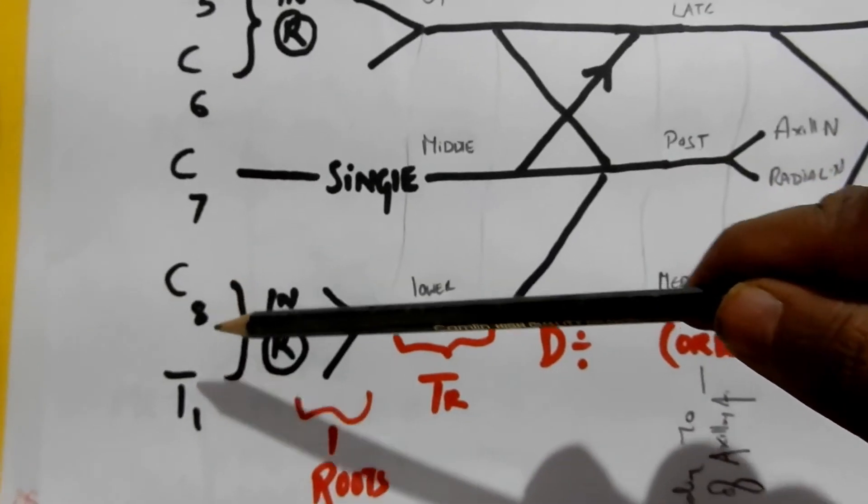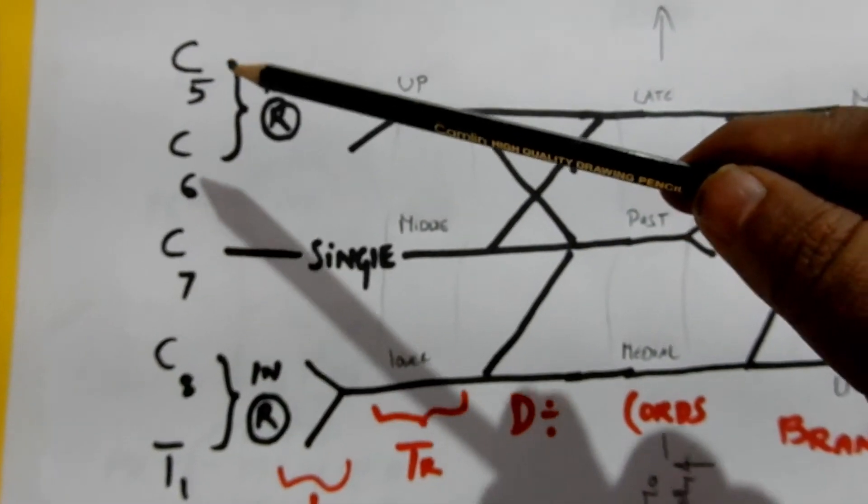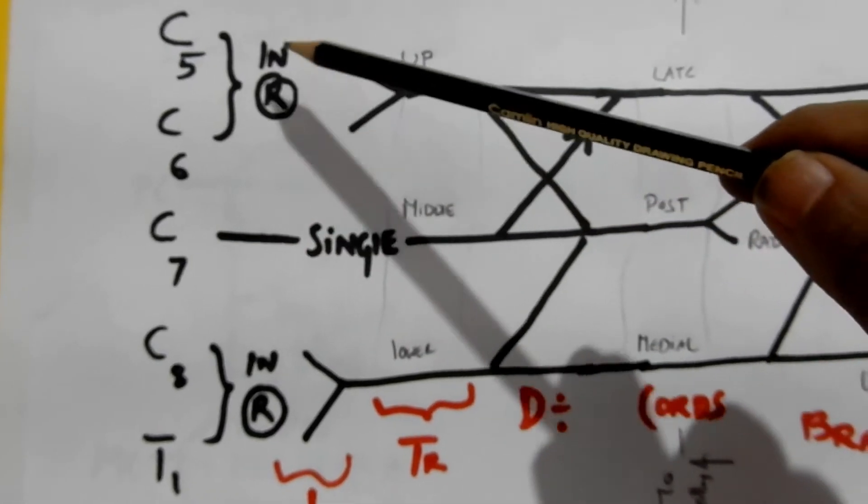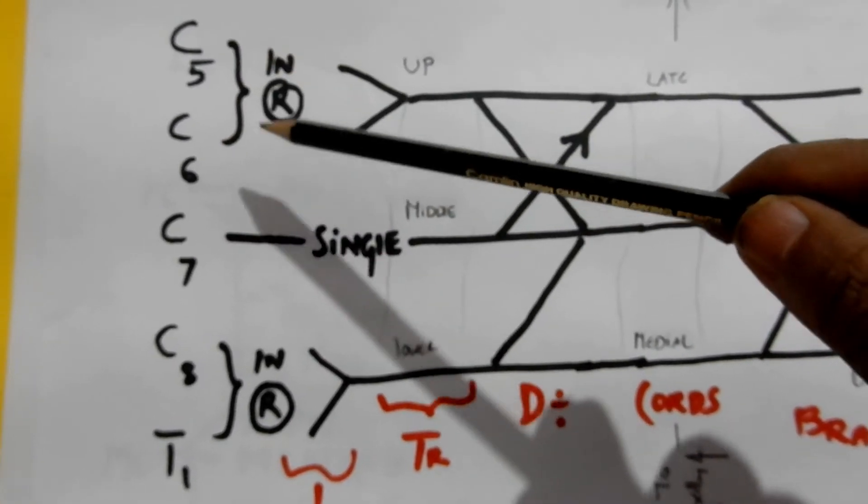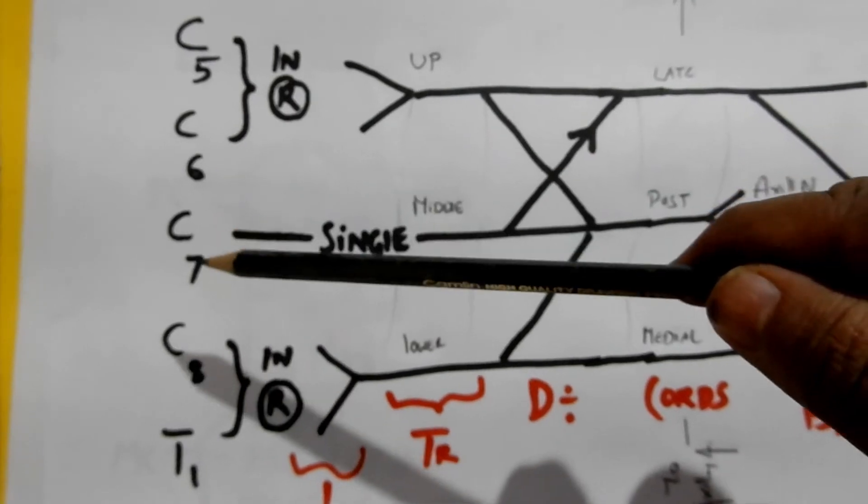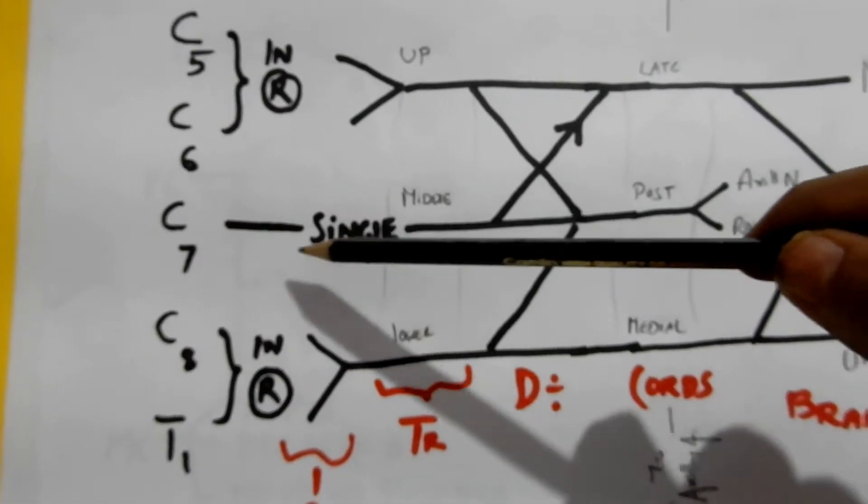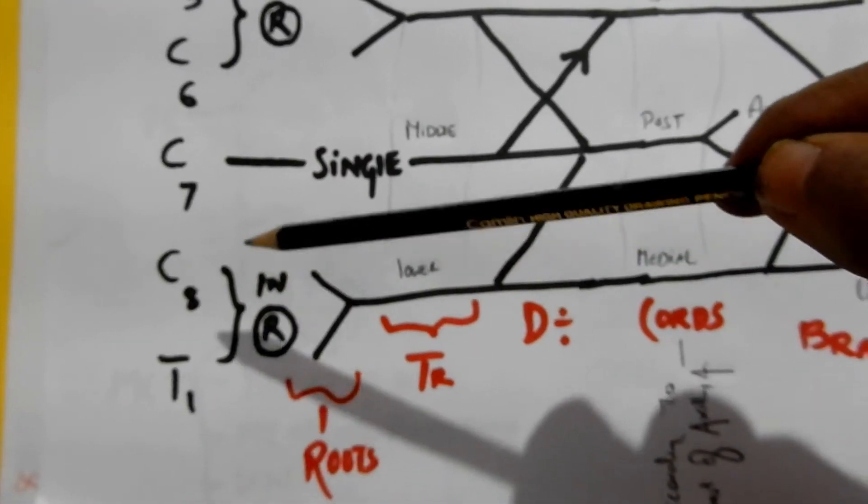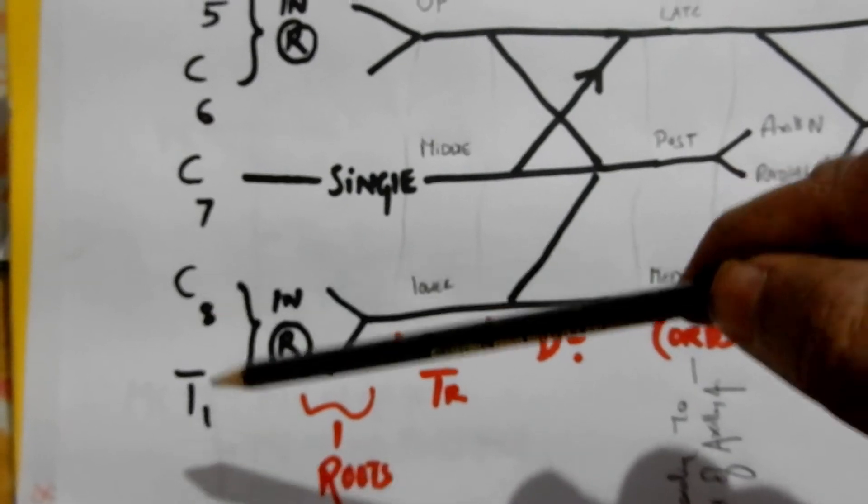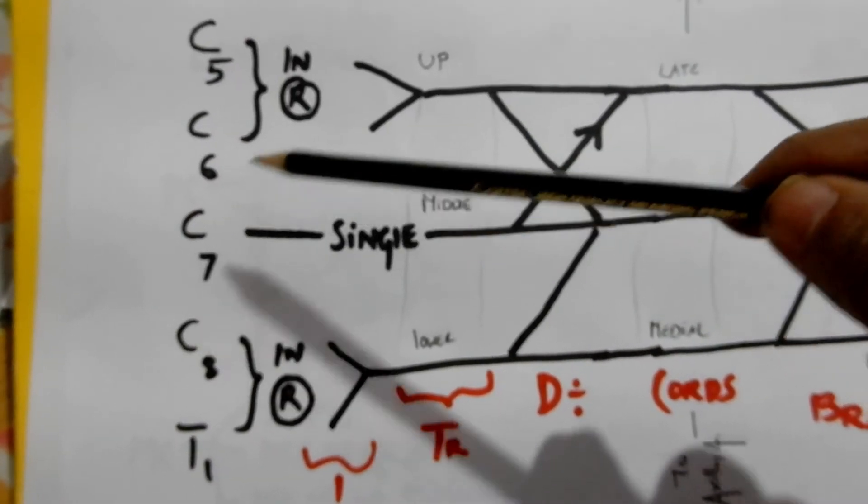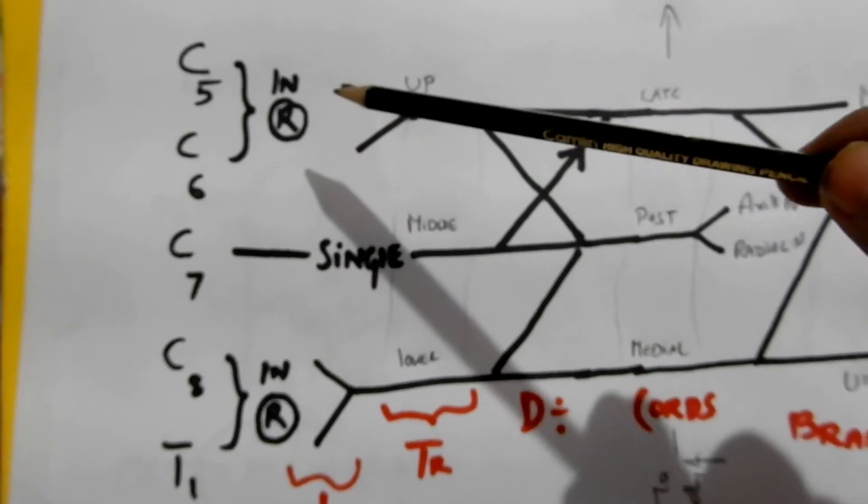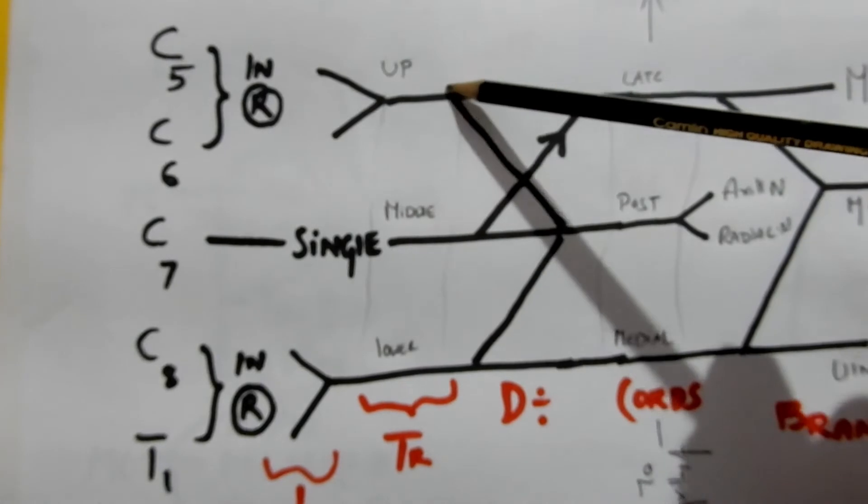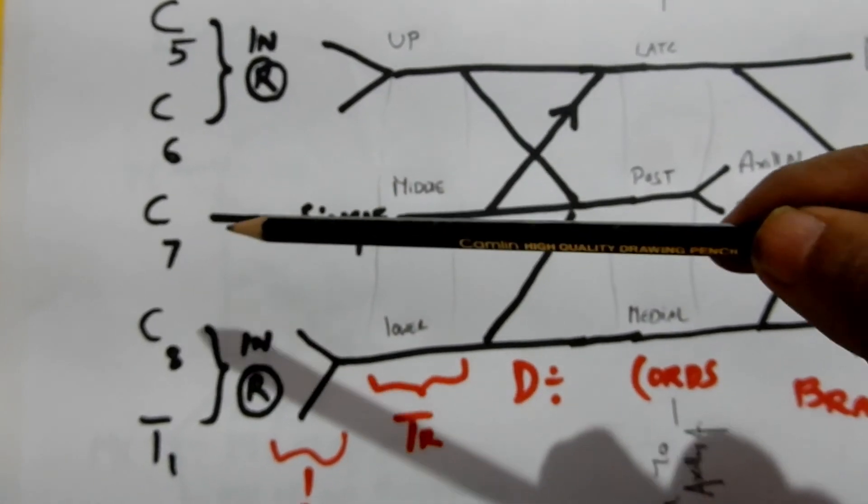Let's say C5 and C6 are in a relationship - boyfriend and girlfriend, they're together. C7 is single - that's me, hard to believe. C8 and T1 are in a relationship. C5 and C6 travel together - they go to movies together, parks together, every place together. C7 travels single completely. C8 and T1 travel together.